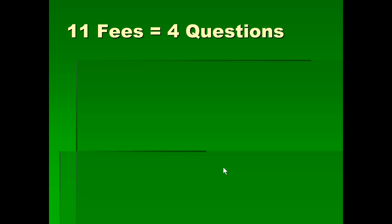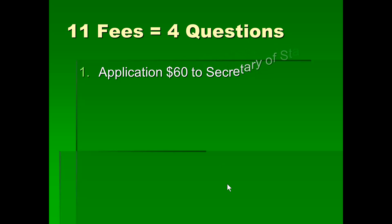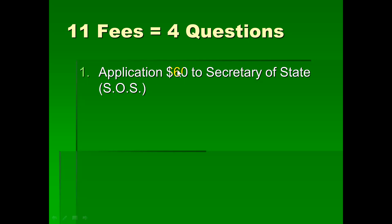There are 11 fees in the notary public license law, and on average there are four questions about them on the 40-question multiple choice exam requiring 70% to pass. The first fee is the application fee of $60 paid to the secretary of state. This is after you pass your exam — your notary privileges do not begin until after you're approved. With your pass slip in the mail comes the application, including an oath of office you need to take and get notarized. You mail a $60 check to the secretary of state in Albany, which covers your first four years.